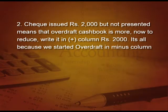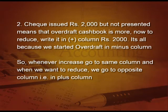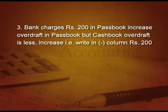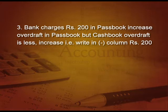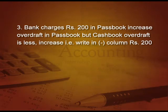So whenever you want to increase, go to the same column, and when you want to reduce, go to the opposite column — that is the plus column. Point number 3: bank charges 200 in pass book has increased the overdraft in pass book, but cash book overdraft is less. We have started with cash book overdraft, so we have to increase the cash book overdraft — write in the minus column 200.